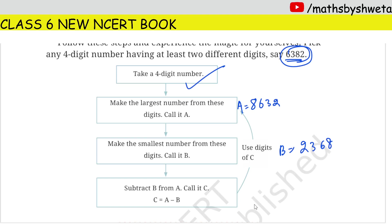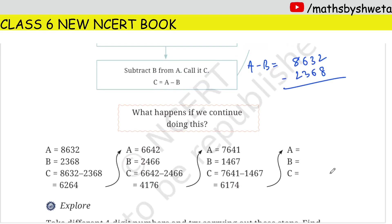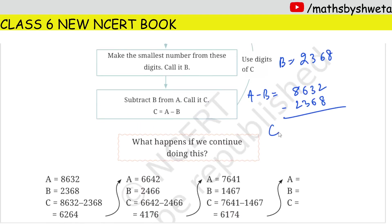Subtract it, I mean A minus B. So 8632 minus 2368, which we will name C. So my answer is 6264.